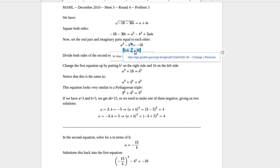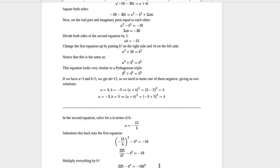You say 2ab equals negative 30, and then you solve for a, so a equals negative 15 over b. And then the first equation was a squared minus b squared equals negative 16. You can substitute that back in, and you get negative 15 over b squared minus b squared equals negative 16. You square negative 15 over b to get 225 over b squared.